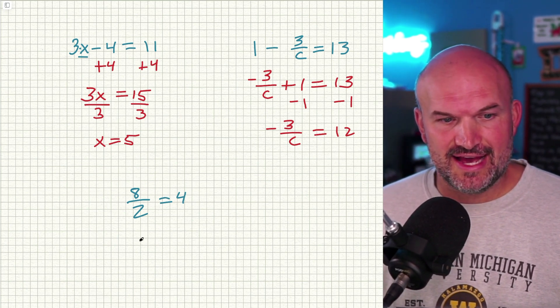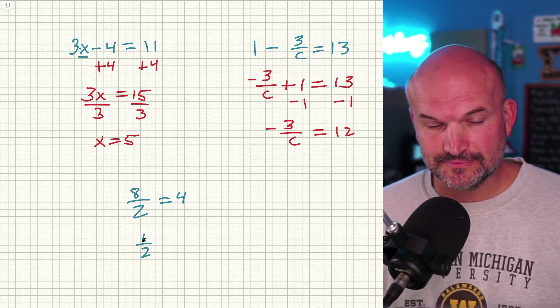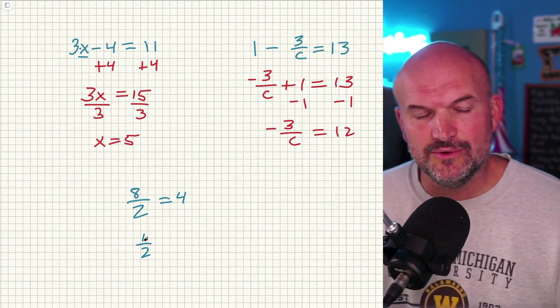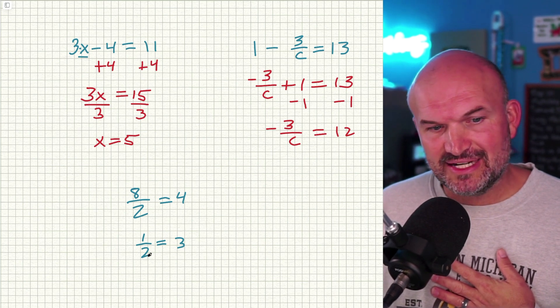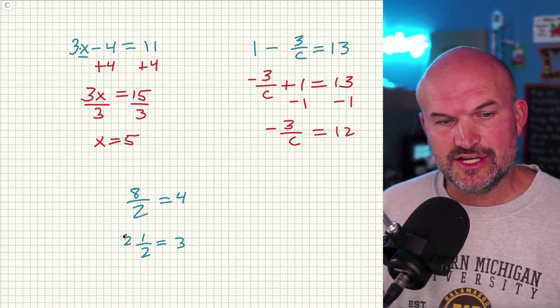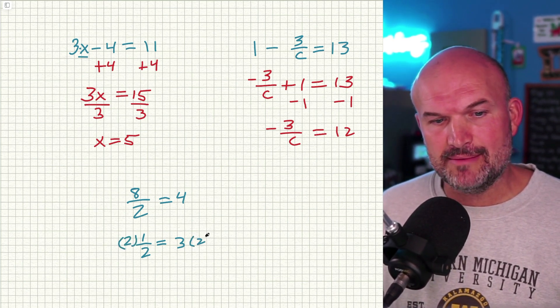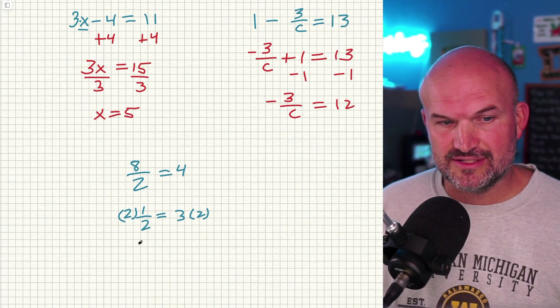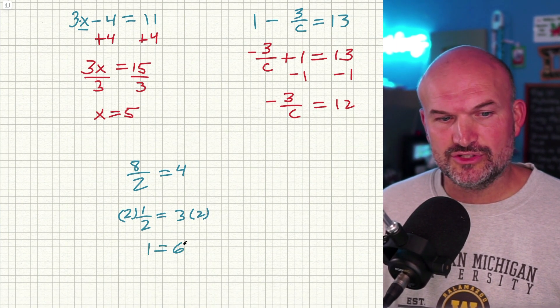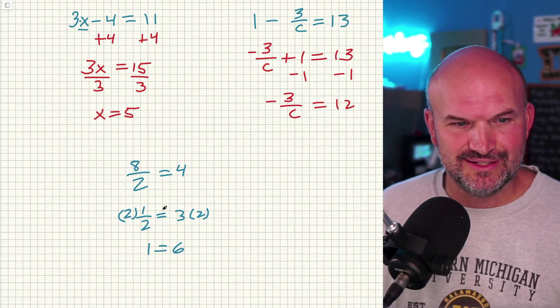Another example is if I had one over two, or one half equals, let's say three. If I want to get this two off the denominator, as long as I use my properties of equality and I multiply by two on both sides, does two evenly divide into two? Yes, it does. So it's going to give me one equals six. I don't know why I'm doing that. That's supposed to be an X. Sorry about that.